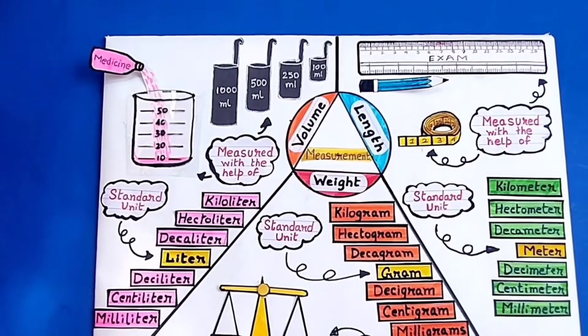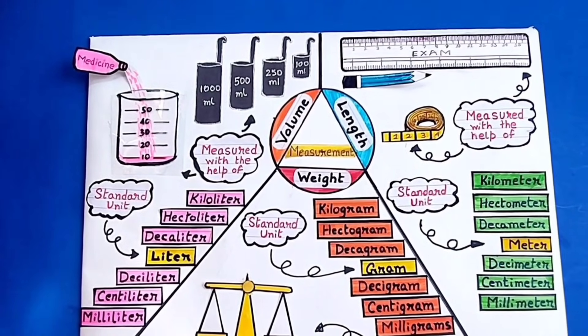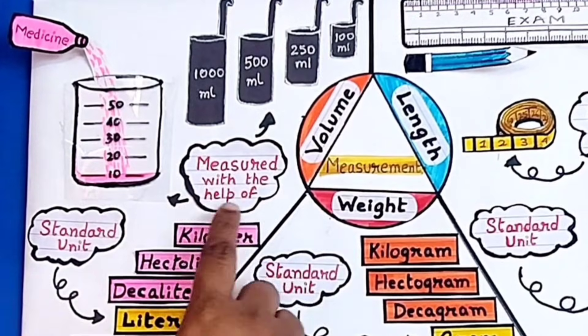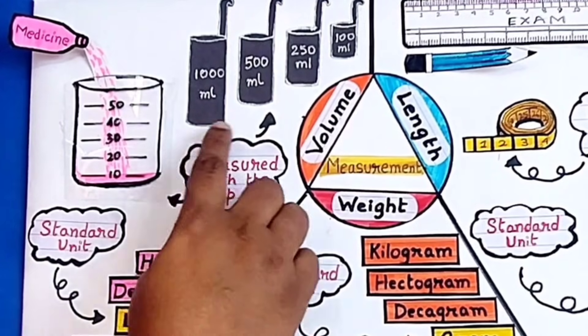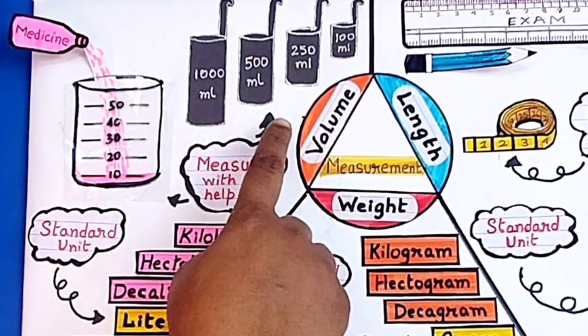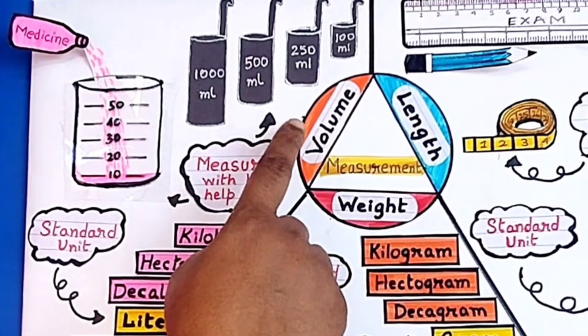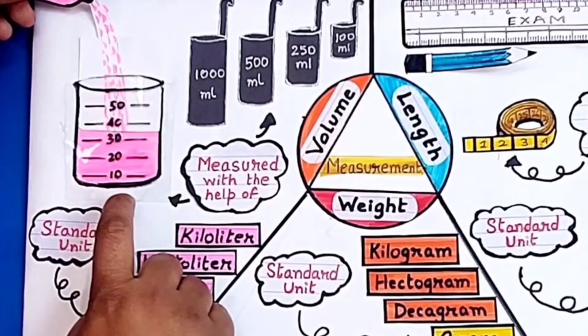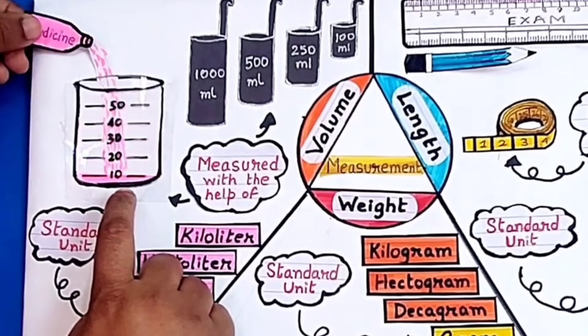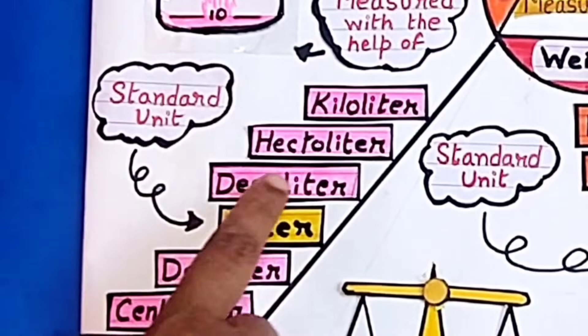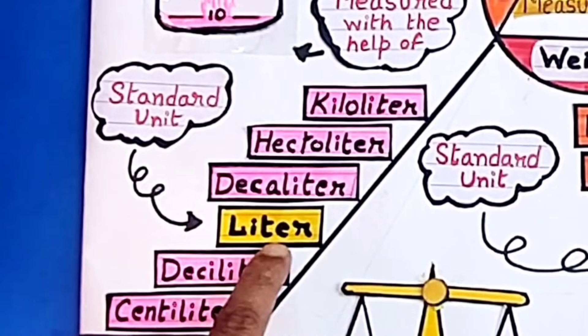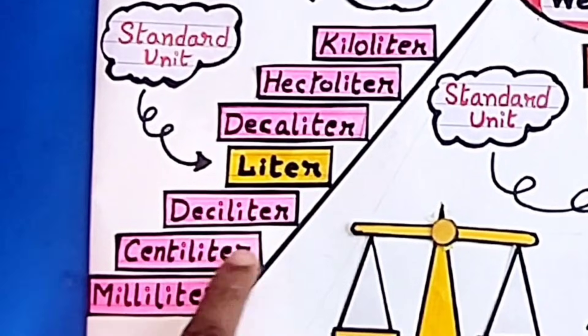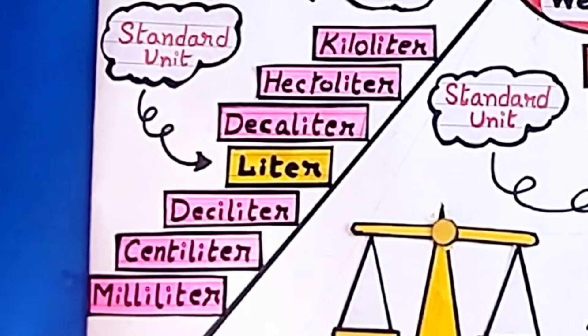This TLM is about measurement units and measurement tools. Some common things we can use to measure volume are these containers. These are used to measure water, milk, etc., and this is used for syrup, medicine, etc. The standard unit of volume is liter. The other units are kiloliter, hectoliter, decaliter, deciliter, centiliter, and milliliter.